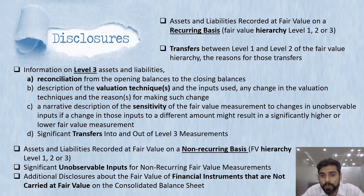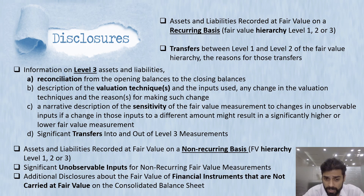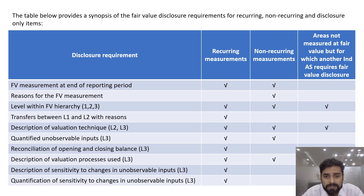For disclosure, we report level 1, 2, and 3 hierarchy. For transfers within level 1 and 2, that must be reported. For level 3, reconciliation is required including valuation technique and sensitivity analysis. For non-recurring measurements, the level hierarchy and unobservable inputs used must be disclosed. Financial instruments carried at amortized cost — not at fair value — must also have their fair value reported in the consolidated balance sheet.